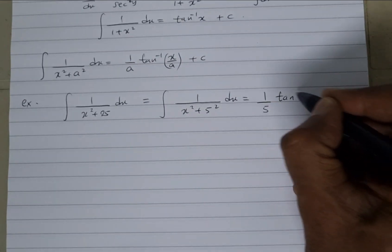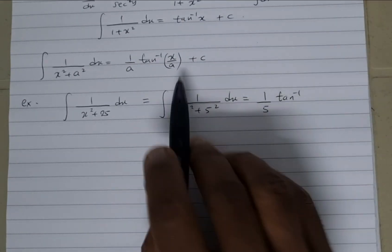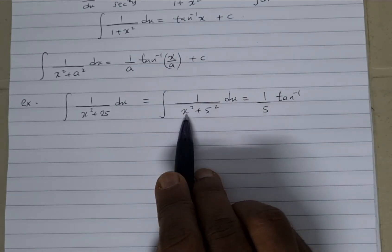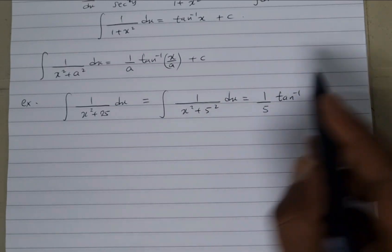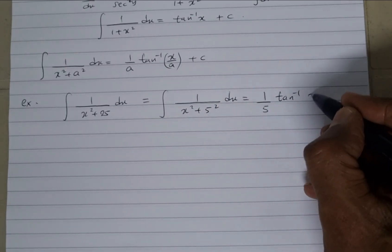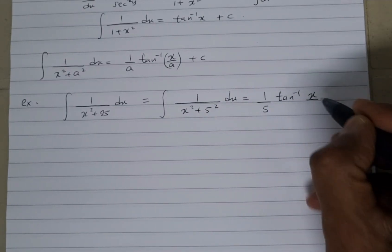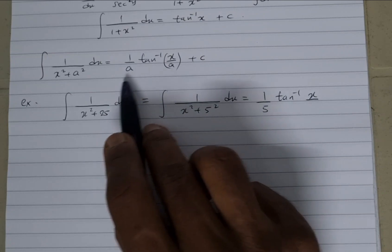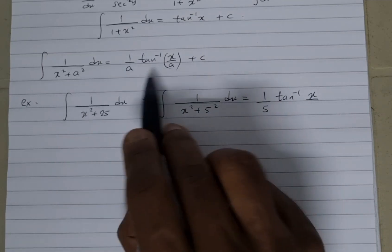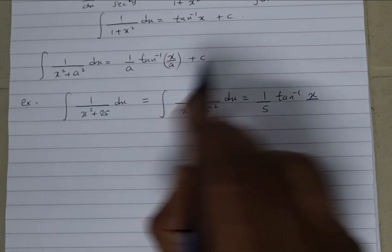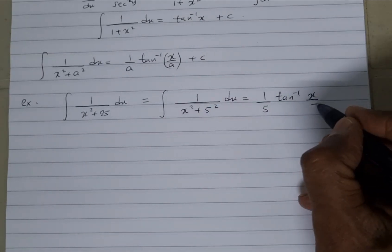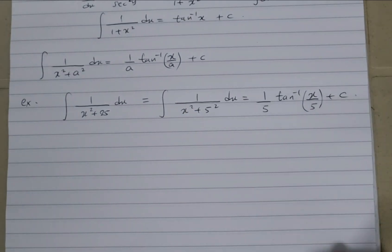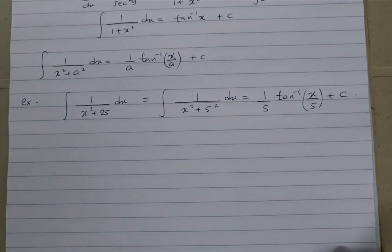So we've got 1 over a which is 1 over 5, and then the tan inverse of x over a, which is x over 5. So the result of example 1 is 1 over 5 times tan inverse of x over 5, plus c. That's how we integrate something like that.